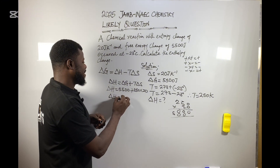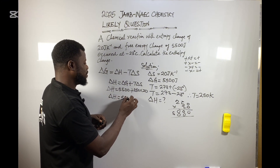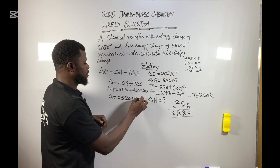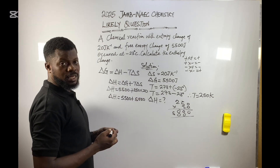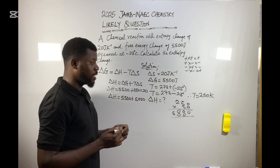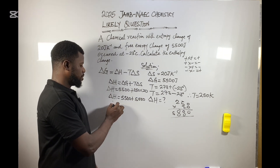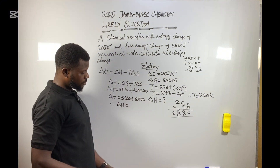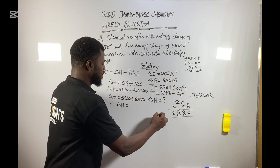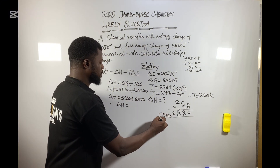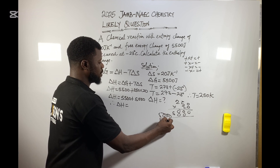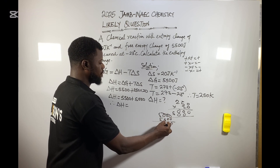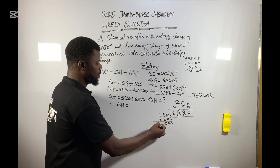So 5500 plus 5000 — don't forget — therefore delta H will be equal to: 5 plus 5 is 10, so the final answer is 10500.